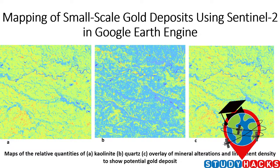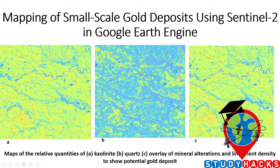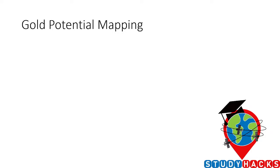Today's session will show how we can easily create a small-scale gold deposit map using Sentinel-2 satellite imagery with different types of band ratios, which is very useful for gold mining. The map shows the high density of kaolinite and quartz, as well as an overlay of mineral orientation and lineament density to show potential gold deposits.